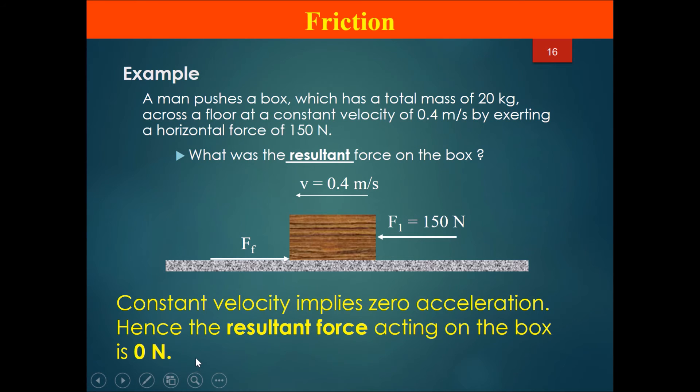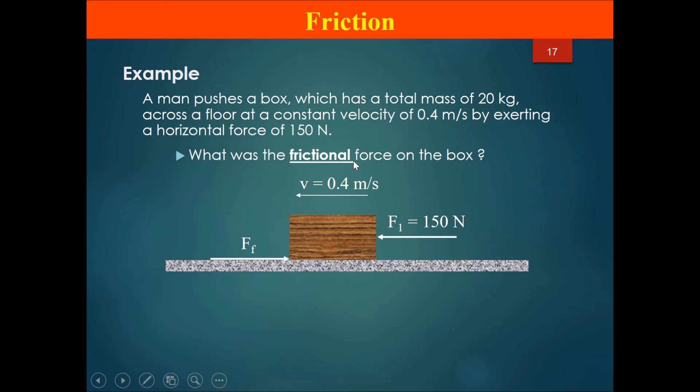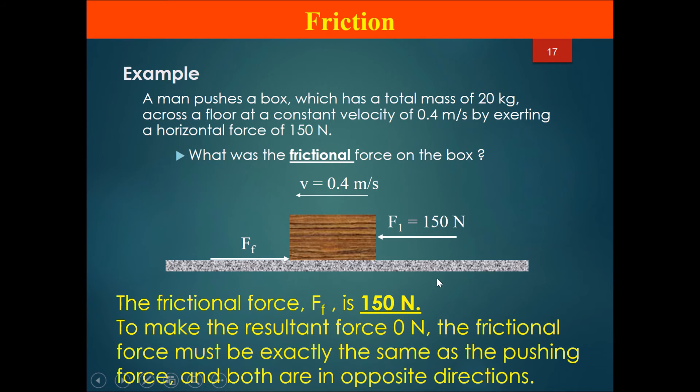They ask you what is the frictional force on the box. From the previous question we knew that the resultant force was 0 N. However, we see here that there's a pushing force of 150 N. Therefore, to get the resultant force of 0 N, the frictional force must be exactly the same number of newtons as the pushing force, so that these two will be the same magnitude but in opposite directions. Therefore, 150 minus 150 will get me zero resultant force.